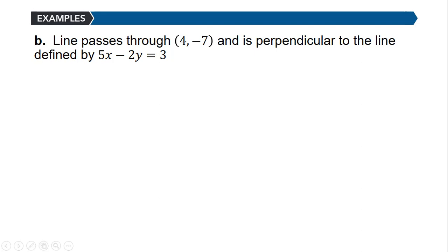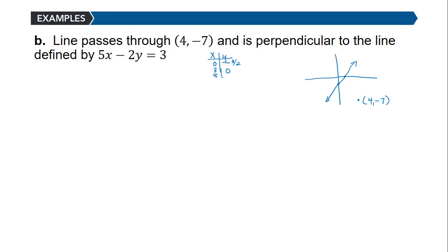Part (b): a line passes through (4, negative 7) and is perpendicular to the line defined by 5x minus 2y equals 3. The point (4, negative 7) is in quadrant 4. Graphing 5x minus 2y equals 3 using intercepts: when x equals 0, y is negative 3/2; when y equals 0, x is 3/5. We want the equation of a line perpendicular to this one through (4, negative 7).